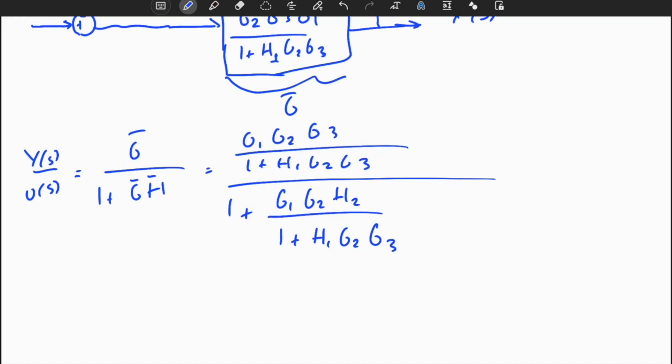In general, we don't want to leave transfer functions in this dirty form. We want to simplify them. So y of s divided by u of s, what I have is this is cancelled from each other. That's great. So I have 1 plus H1 G2 G3 plus H1 G2 H2 in the denominator. And if I look at technically the upper part, I will simply obtain G1 G2 G3. I think everything should be correct now.